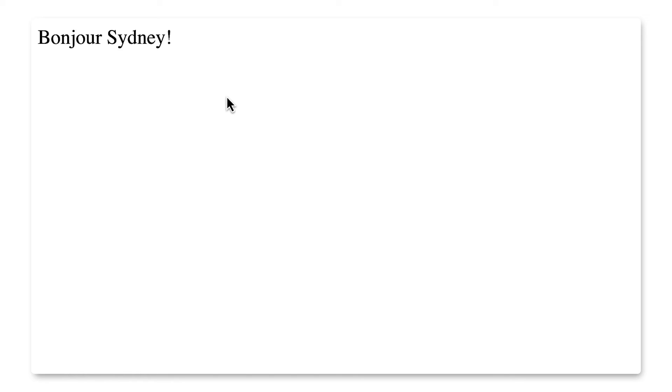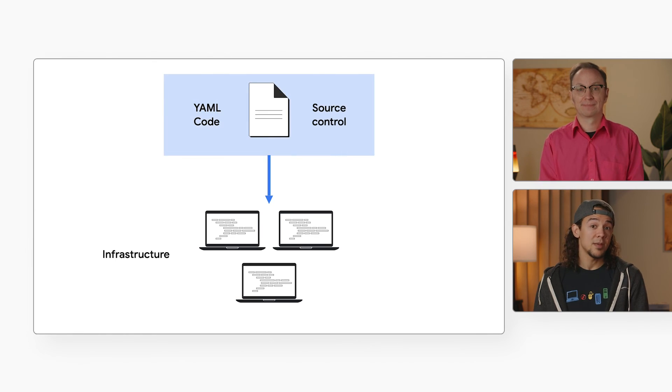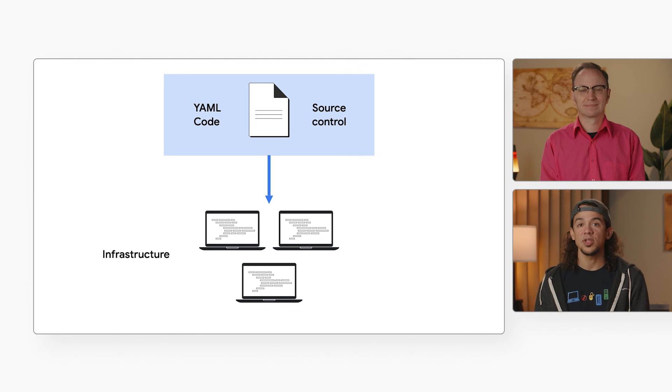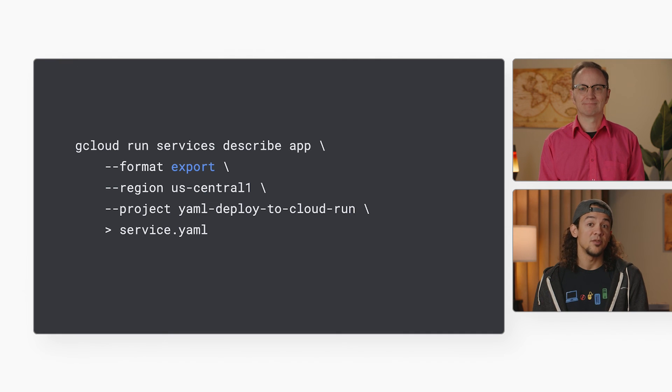We've seen how YAML files can be used to describe and deploy Cloud Run services. To recap, why is that useful? If you keep that YAML file in source control, you always know what the latest settings are for your service, and you can rerun them at any time. When things change and you deploy a new revision of your Cloud Run service, you update the YAML file in your repo. It's very clear what's currently running in your production environment. If you already have a Cloud Run service, you can just run gcloud run services describe, and that will give you the current configuration in YAML.